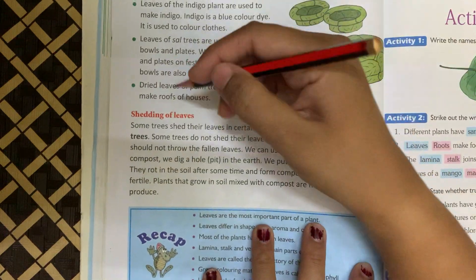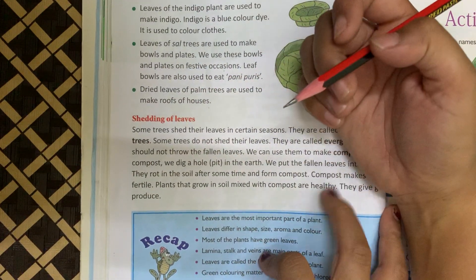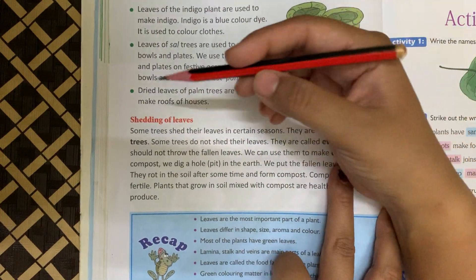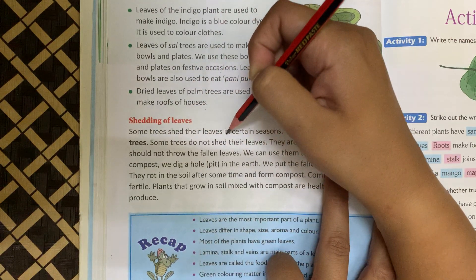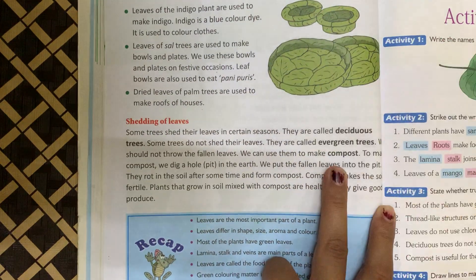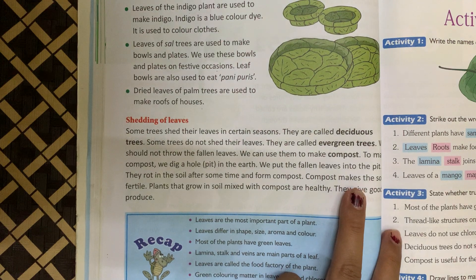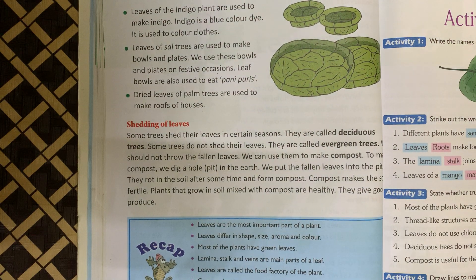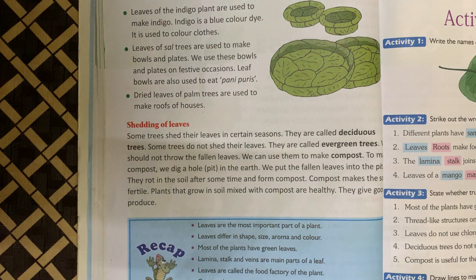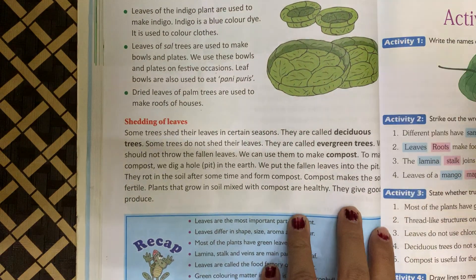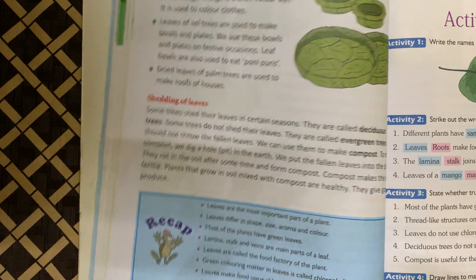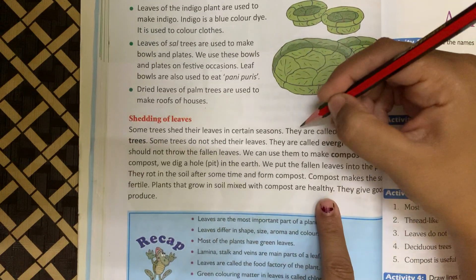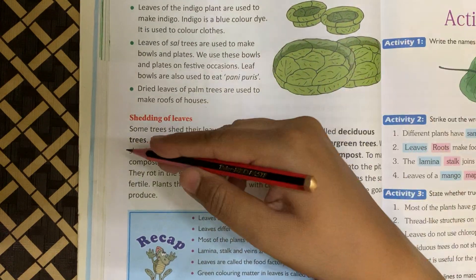Which paragraph are we reading? Shedding of leaves. Now, some trees shed their leaves in certain seasons. Kuch trees ek season mein apni leaves jhad dete hain, unki leaves gir jaati hain. Un trees ko hum bolte hain deciduous trees. They are called deciduous trees.